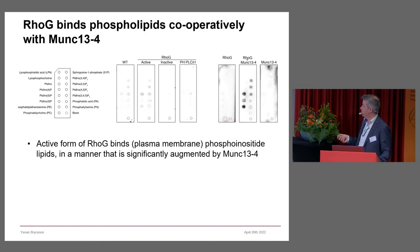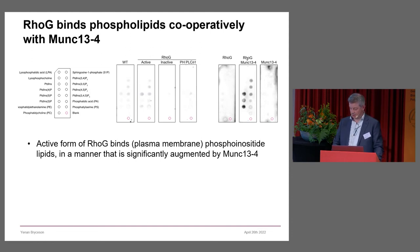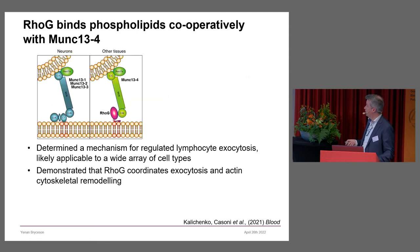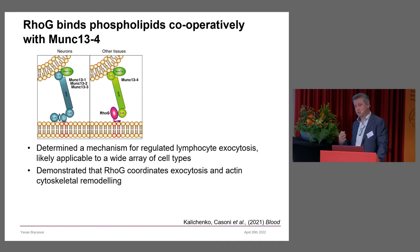We could show that active forms of RhoG, when GTP-bound, bind phosphoinositide lipids more efficiently, and this binding is particularly augmented by MUNC13-4. So there's a cooperative binding between MUNC13-4 and RhoG. We've thereby determined a mechanism of regulated exocytosis likely applicable to an array of hematopoietic cell types.